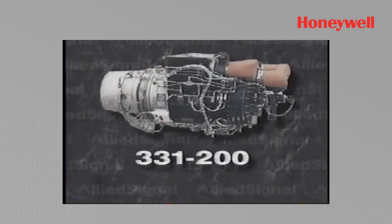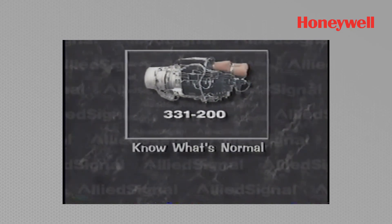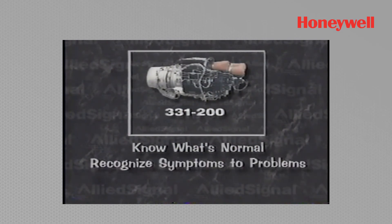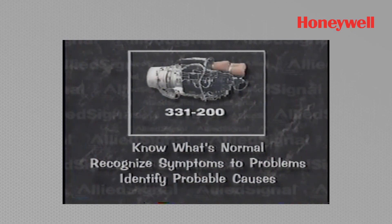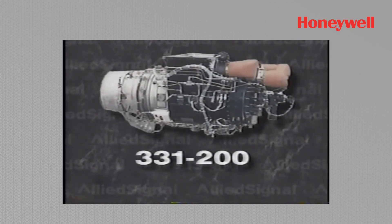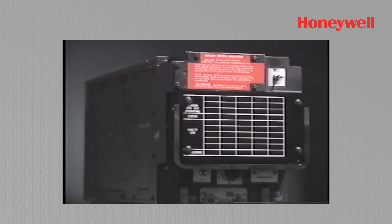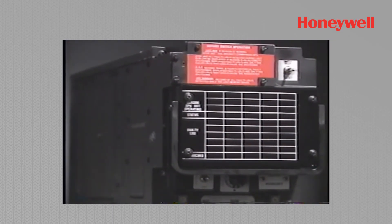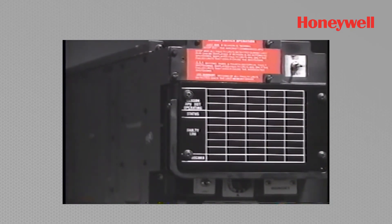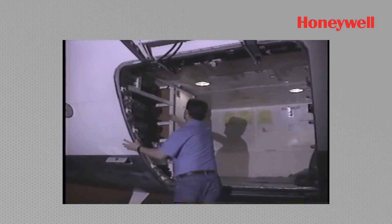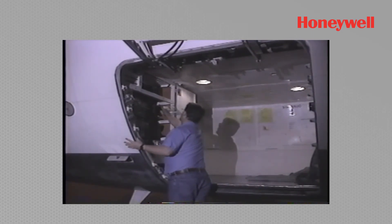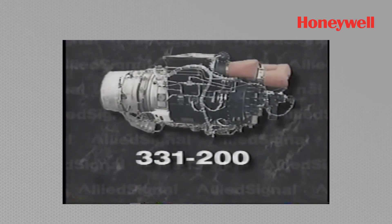In order to correctly troubleshoot your 331-200 APU system, you must first know what's considered normal. You must recognize symptoms to problems and be able to identify probable causes. The reliability and performance of your APU is directly related to understanding Dash 19 ECU operation and being able to correctly interrogate its built-in test equipment. You'll then be able to quickly and accurately troubleshoot your Allied Signal 331-200 APU.